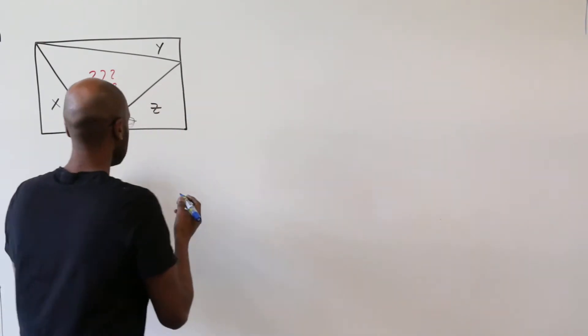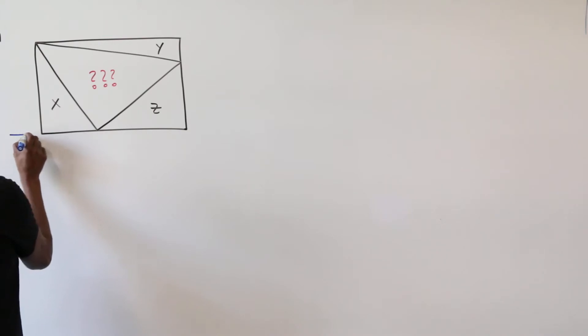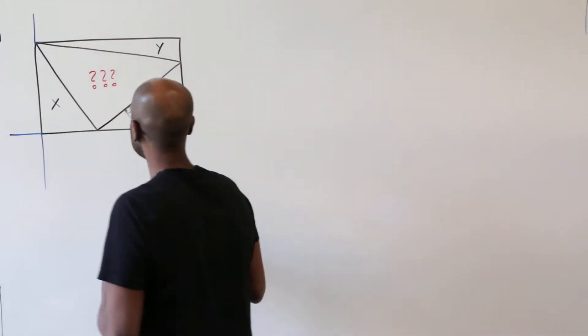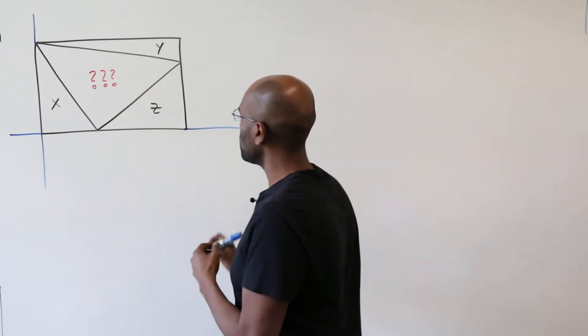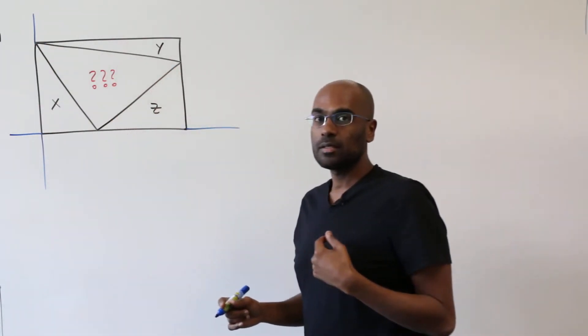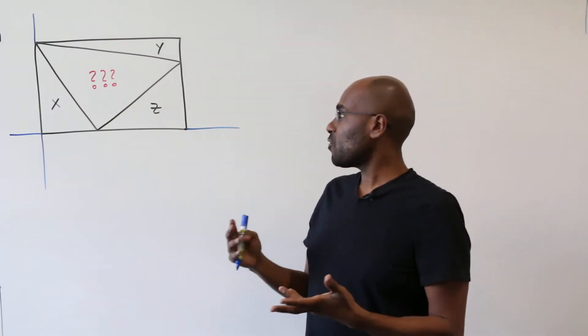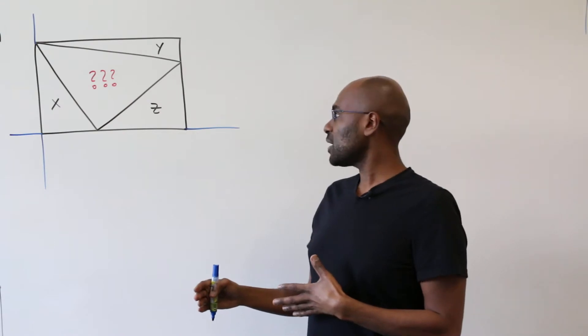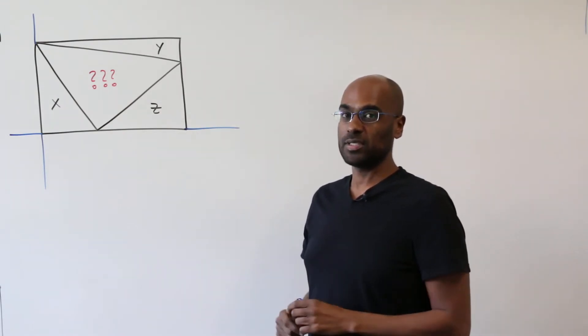The idea is we're going to place this rectangle on a coordinate plane and then what we'll do is aim to find expressions for the vertices of this triangle and then use a formula that allows us to express the area of the triangle in terms of the vertices themselves.